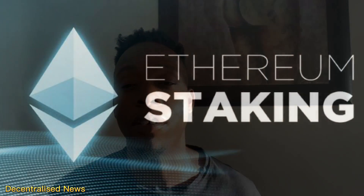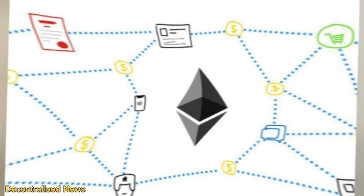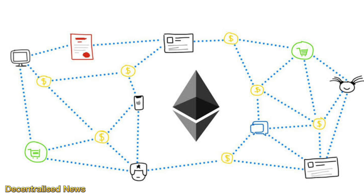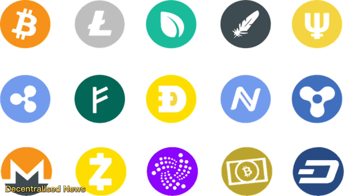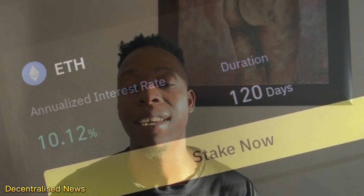The first thing we need to do is define what Ethereum staking is. Ethereum staking refers to the process of holding a certain amount of Ethereum — the native cryptocurrency of the Ethereum blockchain — in a specialized wallet, and participating in the network's consensus mechanism by validating transactions and adding new blocks to the blockchain. In Ethereum, this process is called proof-of-stake consensus, an alternative to proof-of-work used in Bitcoin and earlier cryptocurrencies.